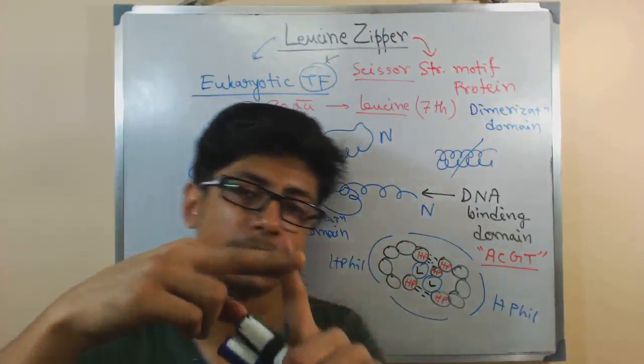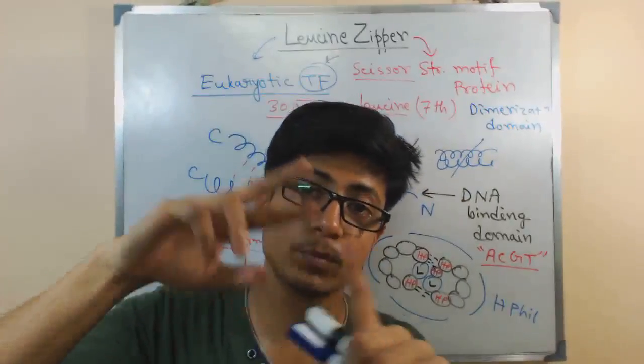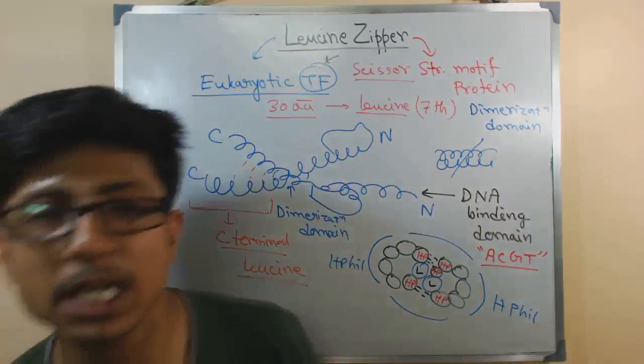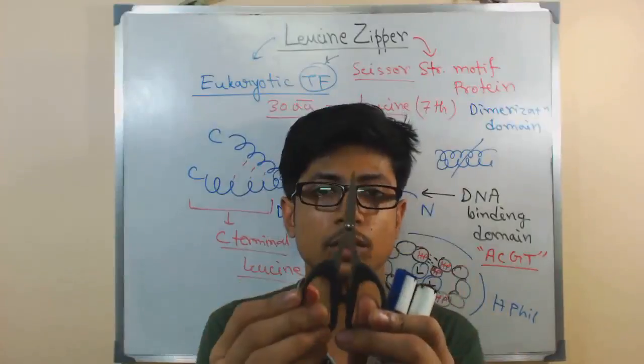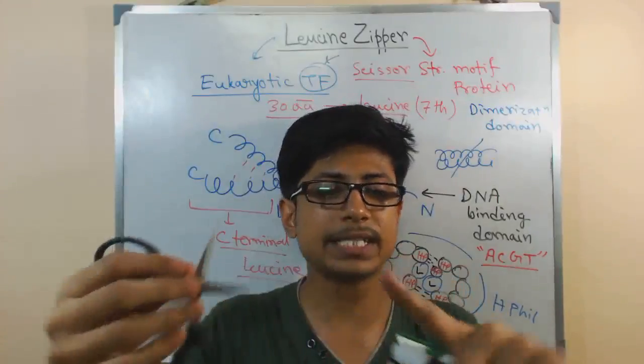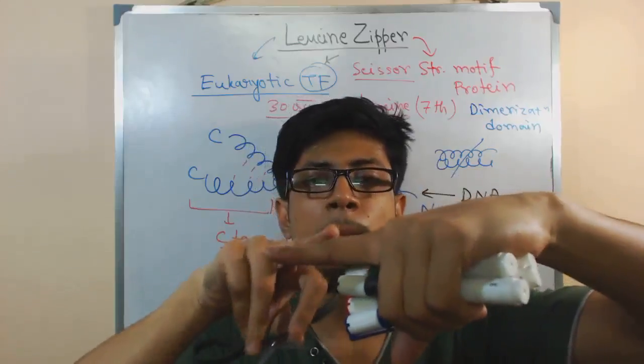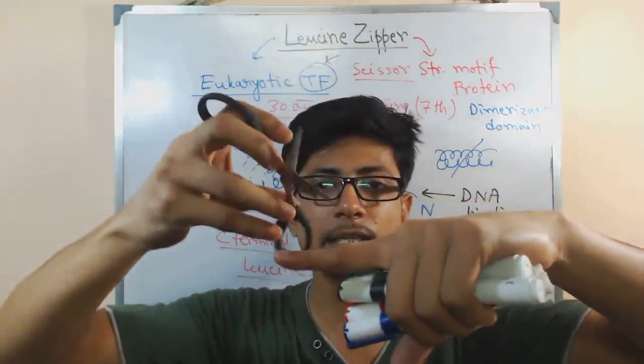Once they are attached there, for this attachment to occur properly, they need to have this conformation, this structure like a scissor, not closed. Let's say this is the DNA, this is the major groove.